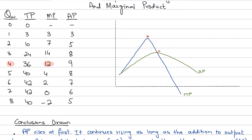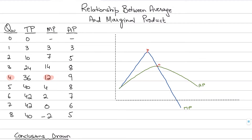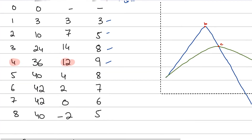First of all, let's assess this table and see how the average product numbers are changing. Average product is basically the output per worker — it tells us how much one worker is producing on average. The formula is total product divided by the quantity of workers. As we increase the number of workers, the average product goes up from 3 to 5, then 5 to 8, then 8 to 9, and after 9 it starts to fall: from 9 to 8, 8 to 7, 7 to 6, then 5.